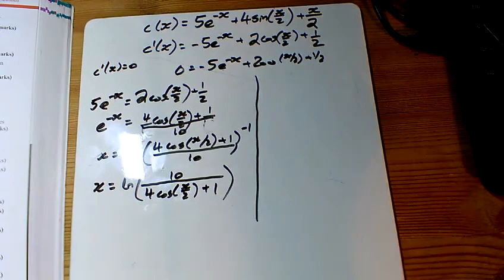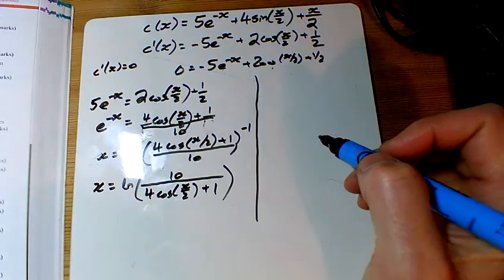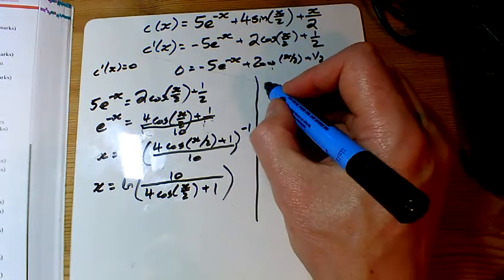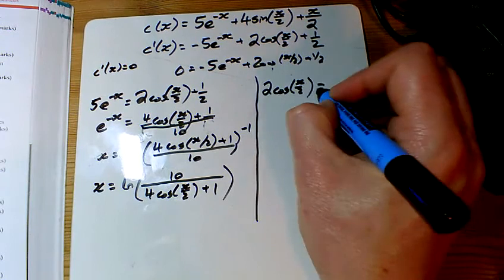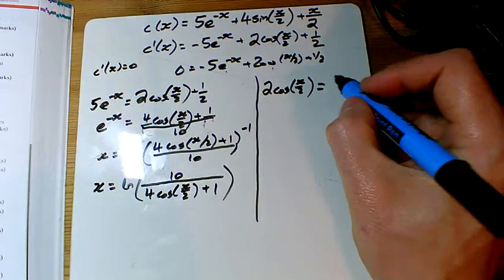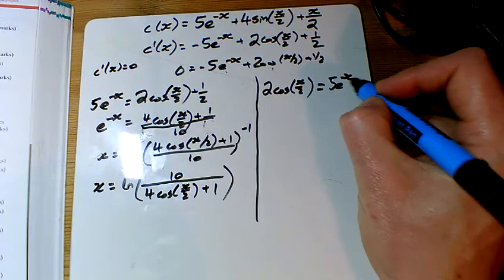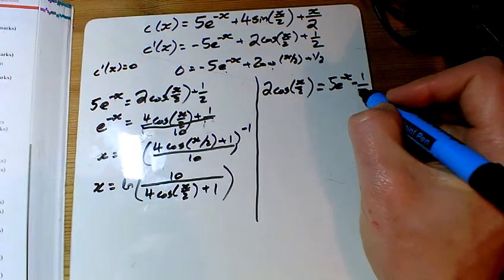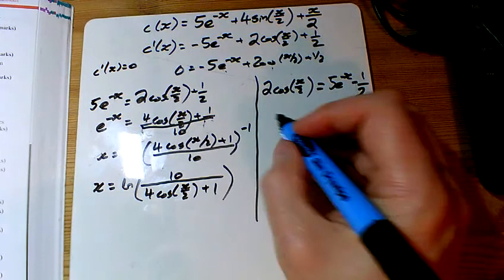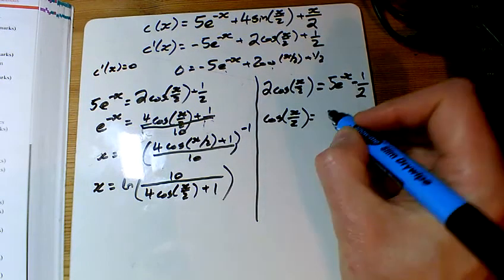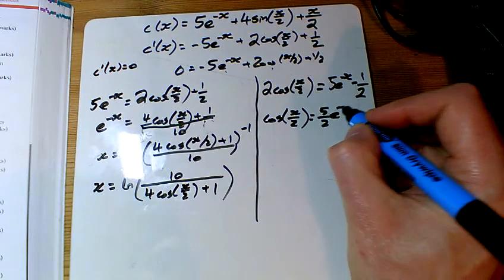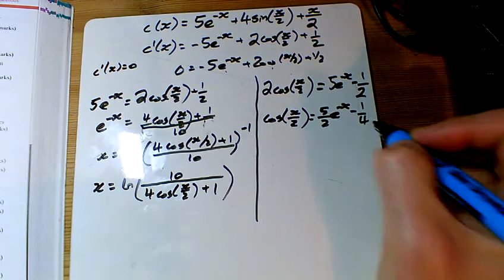Let's do the second rearranging as well. The second rearranging would be to get the cos all on its own. So I've got 2 cos of x over 2 equals, add that to the other side, 5e to the minus x, take away a half. Divide by 2. So cos of x over 2 equals 5 over 2 e to the minus x, take away a quarter.